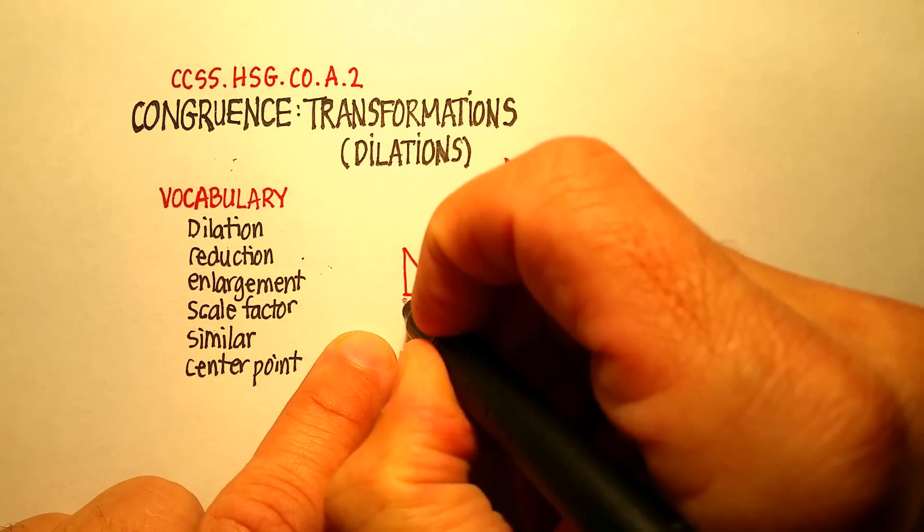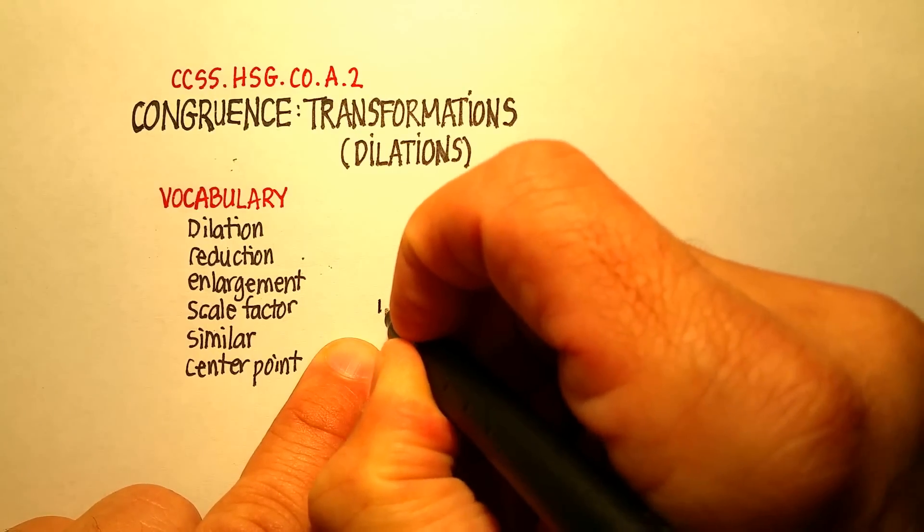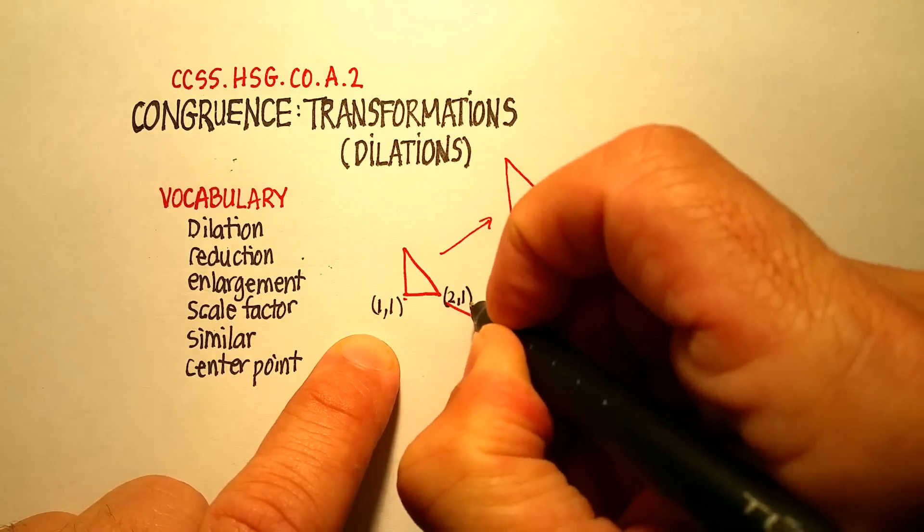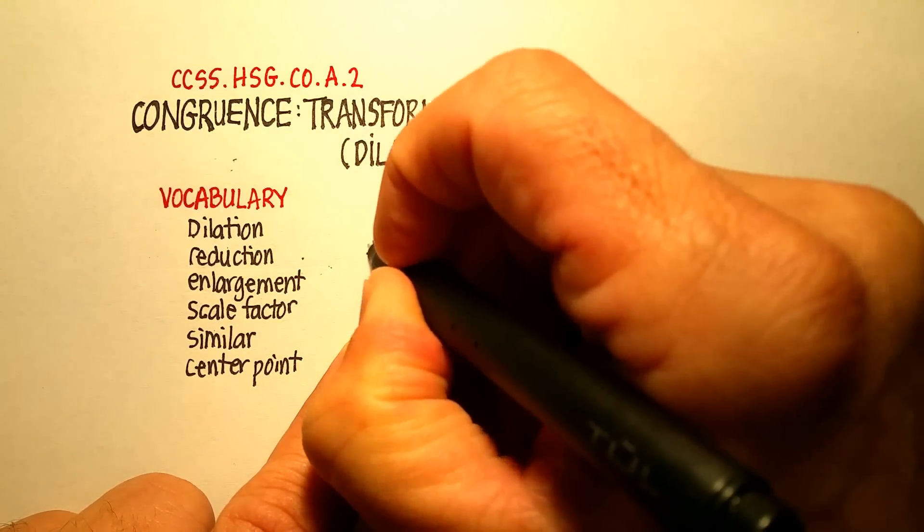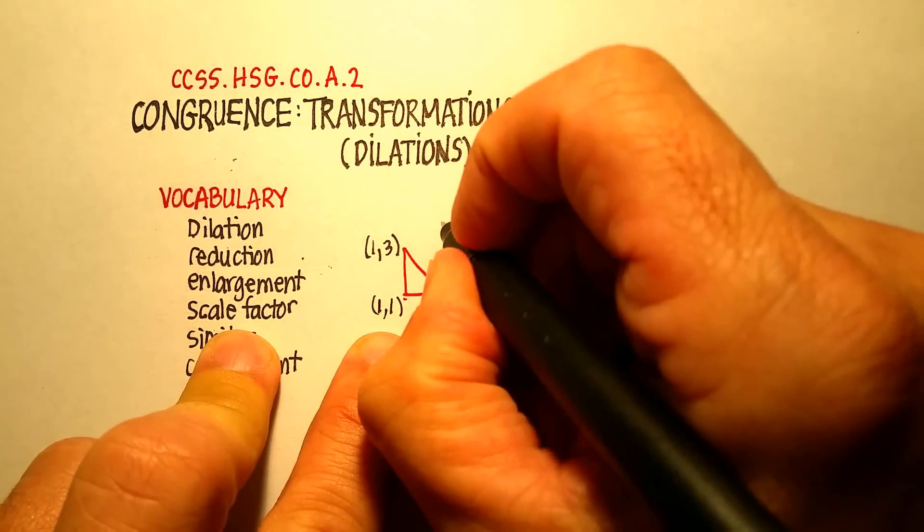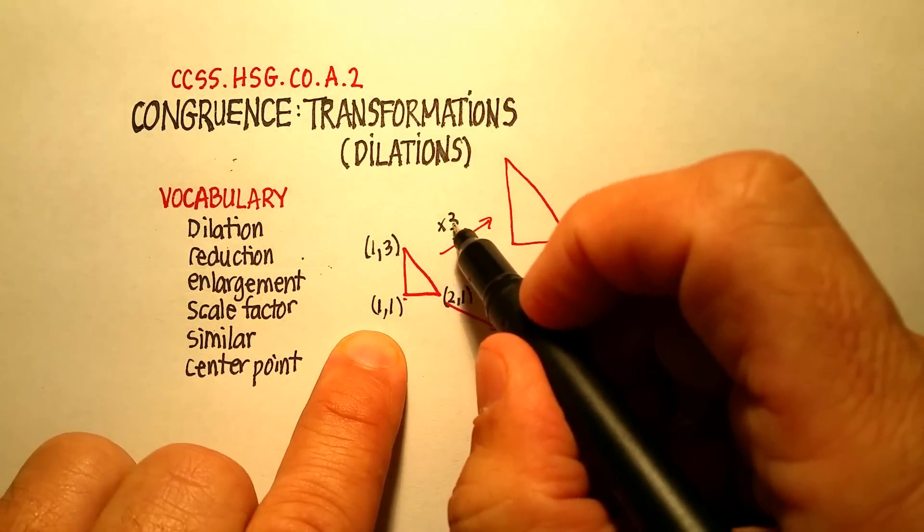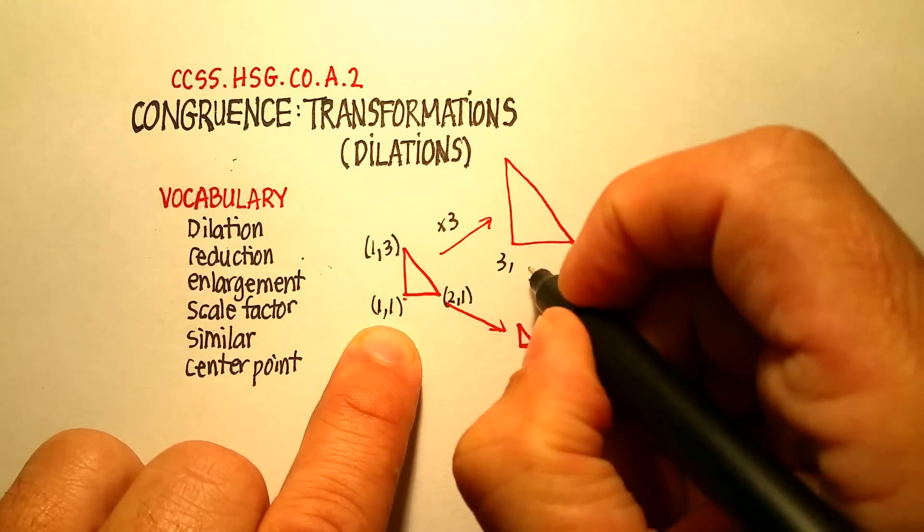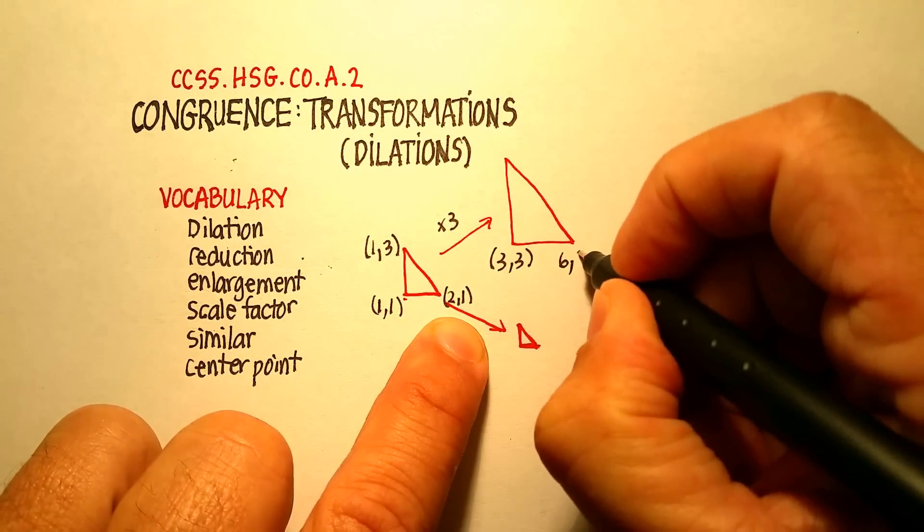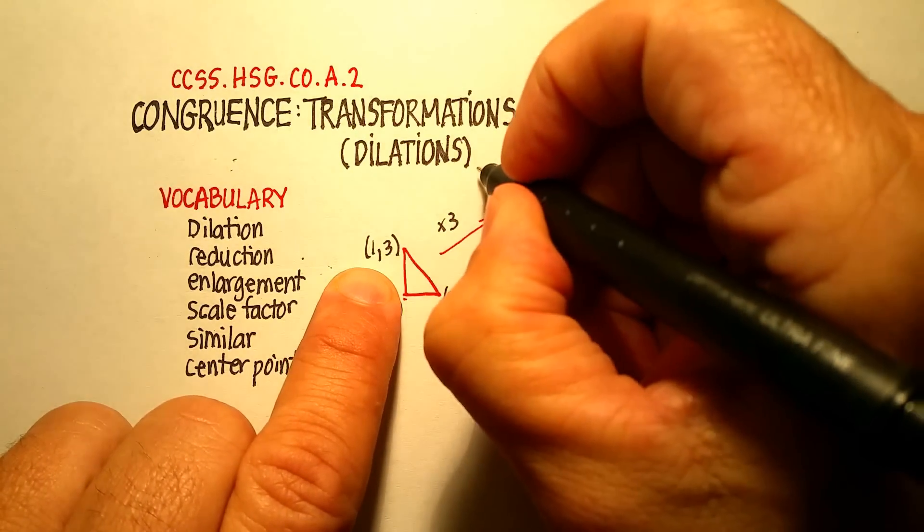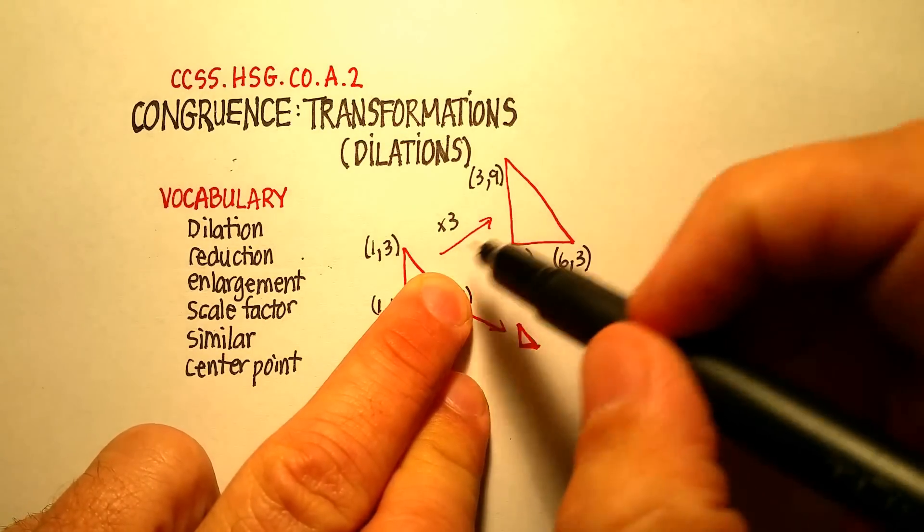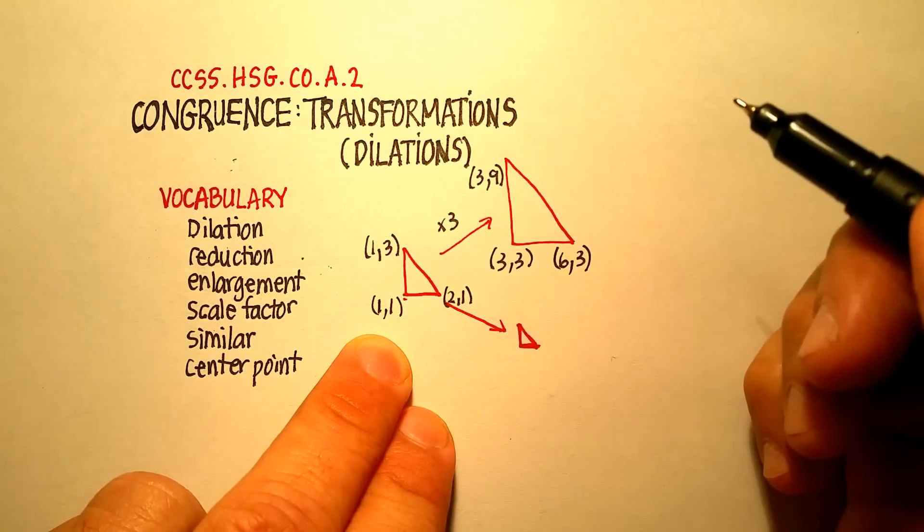So for example, let's say that this was, we'll call this point (1,1). We'll call this point over here (2,1). And we'll call this point up here (1,3). The scale factor would be, I would multiply each one of these points by a particular scale. So let's say that 3 times that, 3 times the x would make this 3, 3 times the y would make that 3, 3 times this x would make that 6, 3 times that y would make it 3, and then finally 3 times this 1 again would make it 3, but 3 times this 3 would make it 9. This new figure, which is enlarged, is multiplied by 3, or the scale factor of 3.